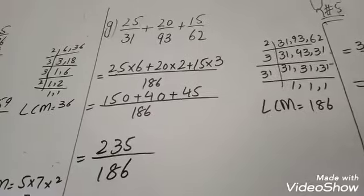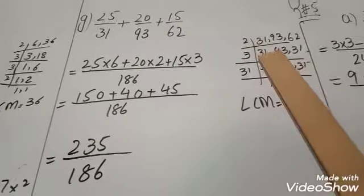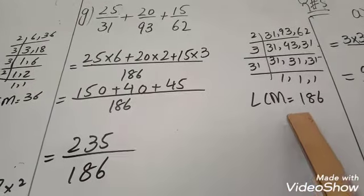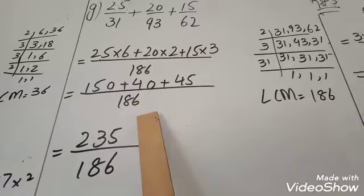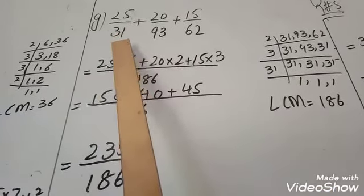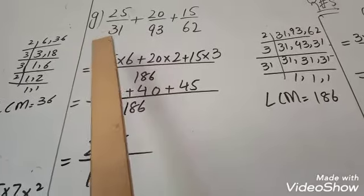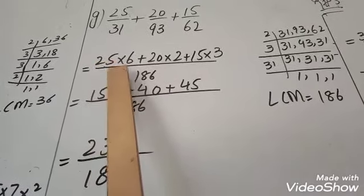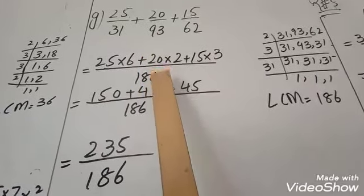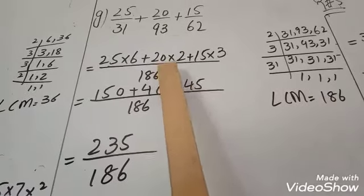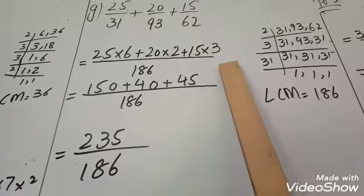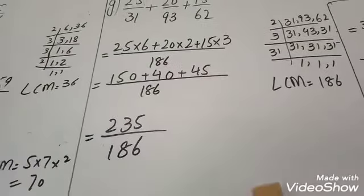Next question is also the same. We take LCM of 31, 93, and 62, and LCM is 186. So we write 186 here. First value denominator is 31 — 31 times 6 is 186, so multiply 25 by 6. Then 93 times 2 is 186, so multiply 20 by 2. Plus 15, multiply by 3. Now we add these values to get the answer.